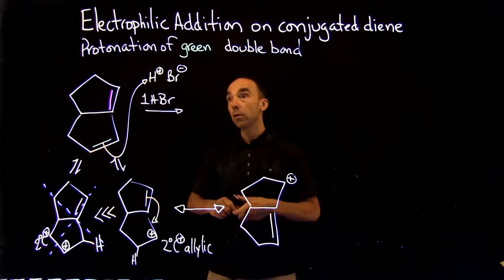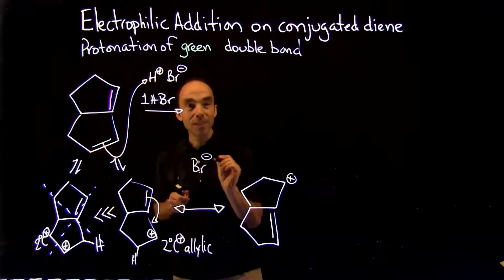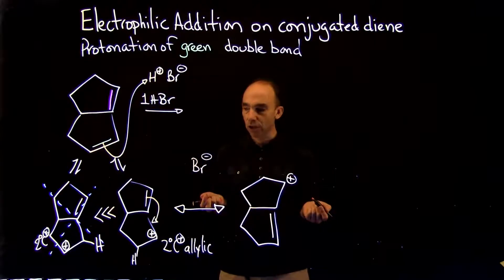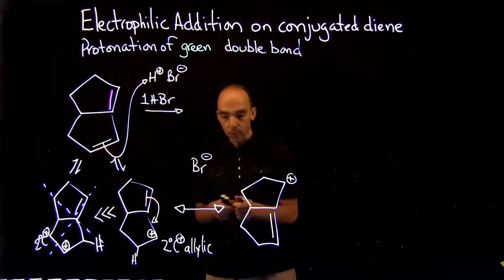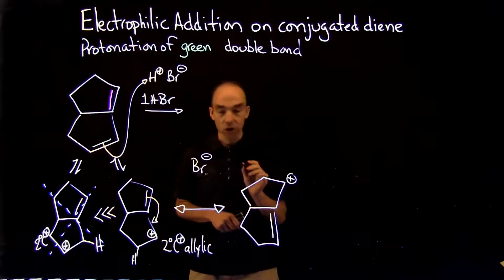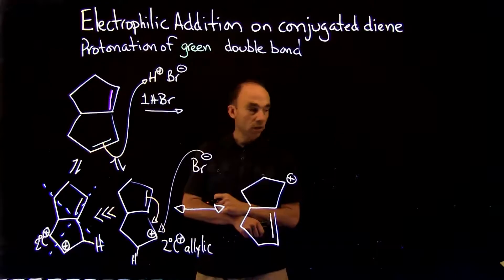In the next step, we can draw the bromine, more specifically the bromide with a negative charge, and that bromide can react with the carbocation, so we can have addition of the bromide on the carbocation.